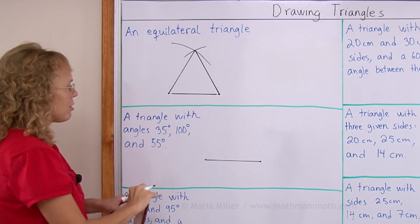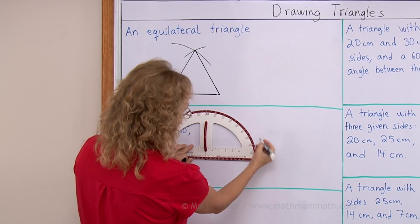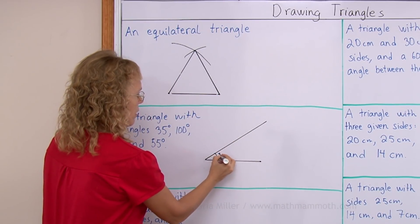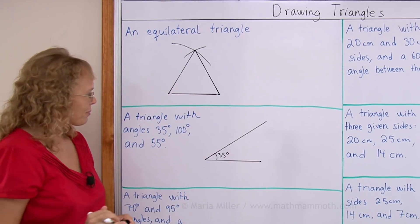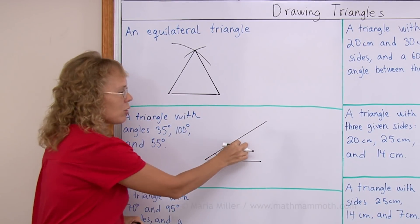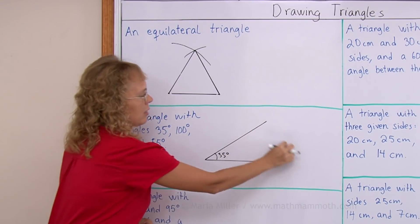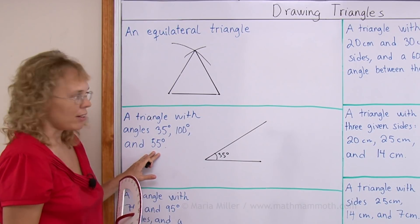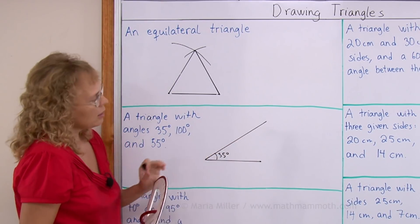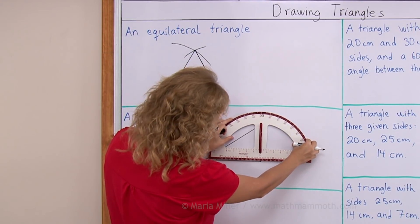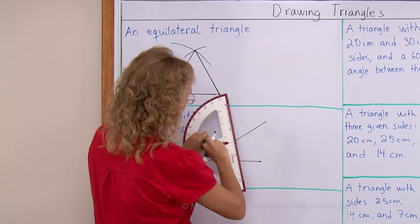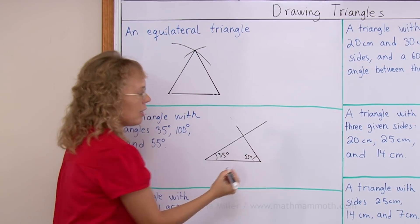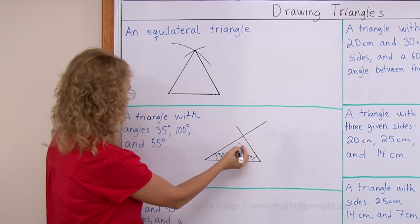And then I will draw a 35 degree angle. Let's say 35 degrees would go over there. Here's 35 degrees. And now what? The next angle would be 100 degrees. It could be here, right? Or it could be here. Or I could use the 55 degree angle. Maybe put that one here. Let's see if that works. 55 degrees. Yes, this is now 55 degrees. And now the triangle is already there. So this over here must be the 100 degree angle.